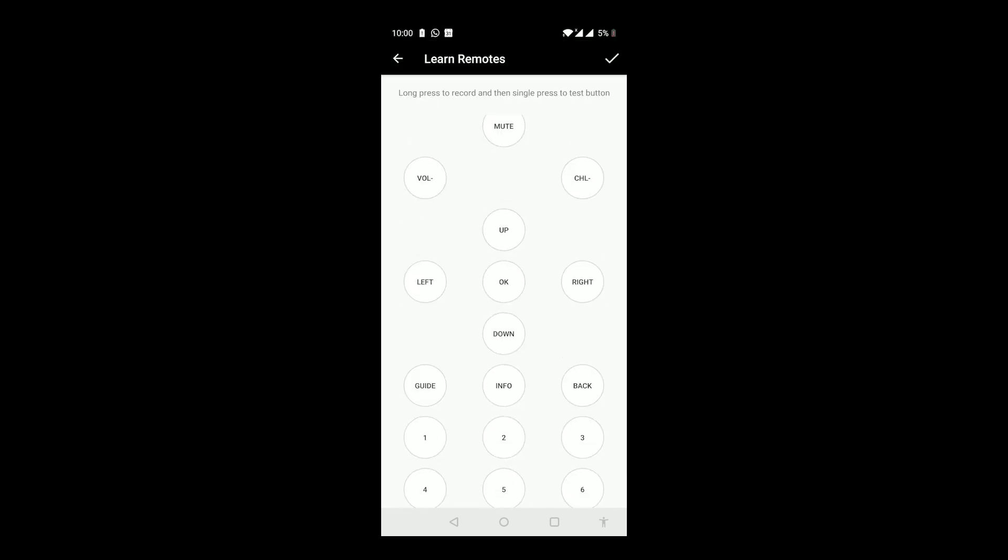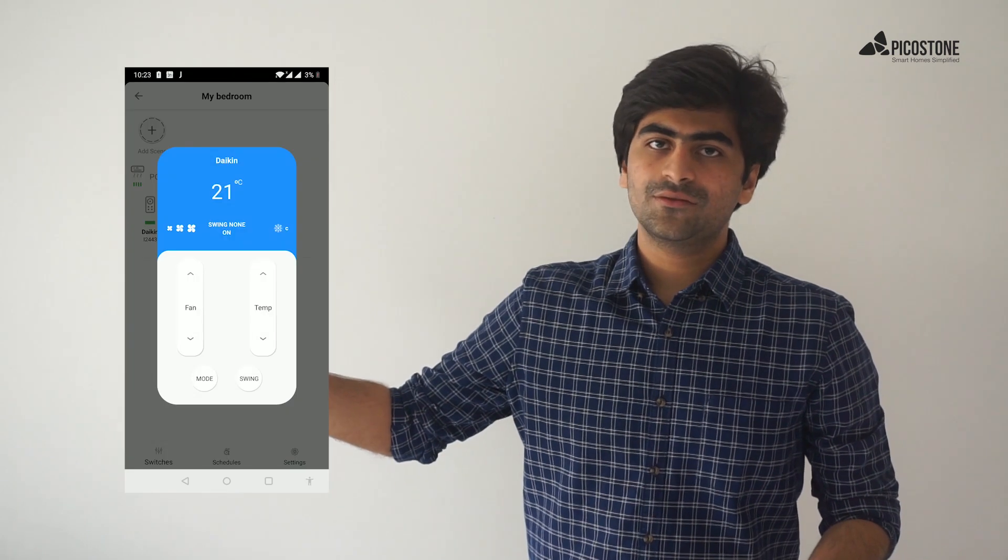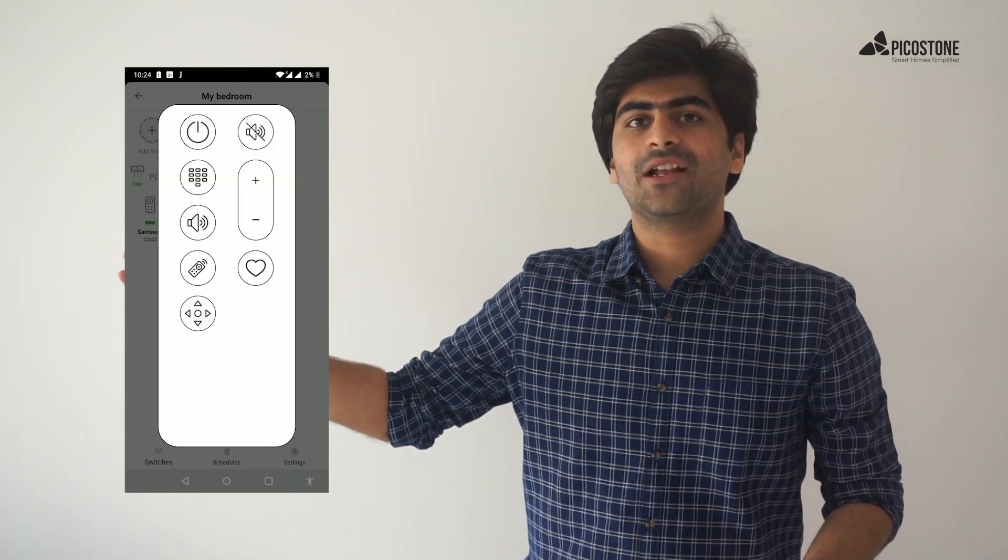The TV set-top box learn screen looks something like this and has a similar learning process. You can now see the remote on the node. This is what an AC remote looks like, and that is what a TV set-top box remote looks like.